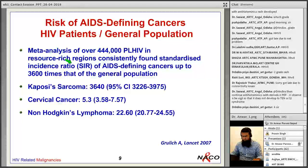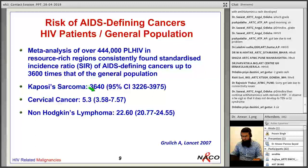A meta-analysis of 444,000 patients in resource-rich regions consistently found standard incidence ratios for AIDS-defining cancers up to 3,600 times that of the general population.